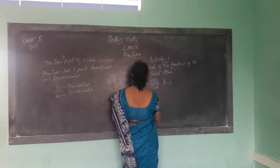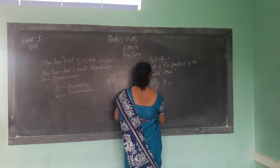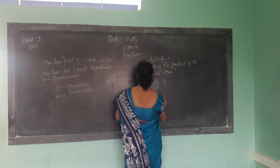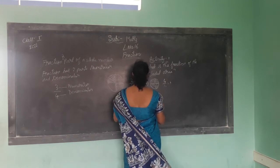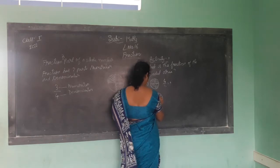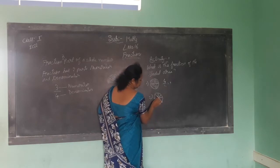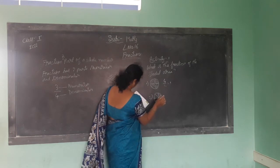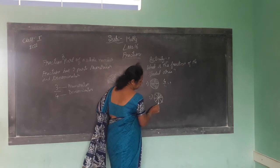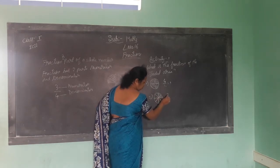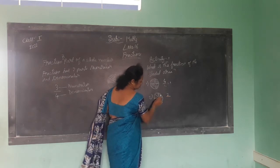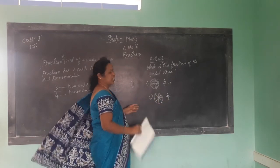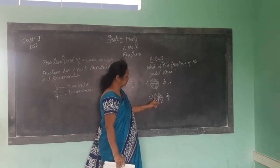Now I'll take the second one. How much part is colored here? 1, 2 — you write in the top number. Now count total: 1, 2, 3, 4, 5, 6, 7, 8. Two by eight of the fraction is shaded. Shaded is 2, total is 8 parts.